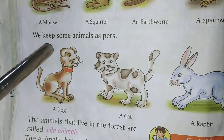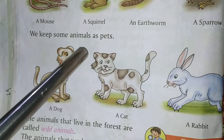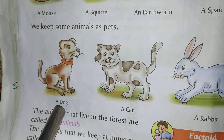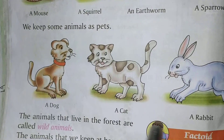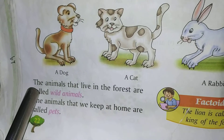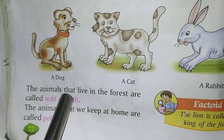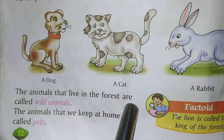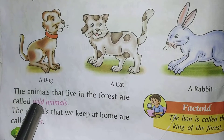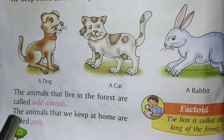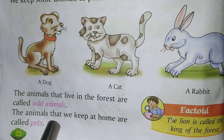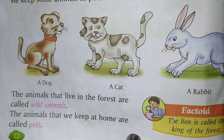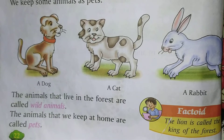We keep some animals as pets. For example, a dog, a cat and a rabbit. The animals that live in the forest are called wild animals. The animals that we keep at home are called pets.